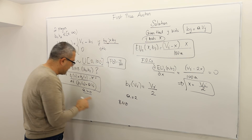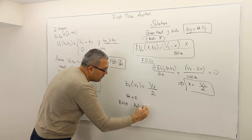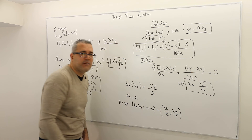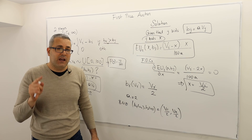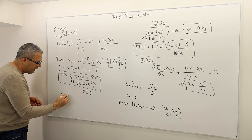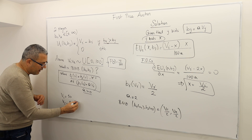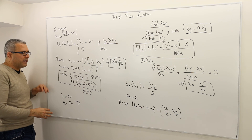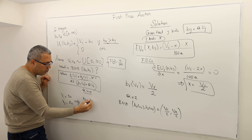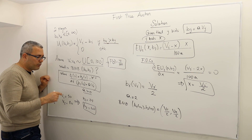The Bayesian Nash equilibrium in symmetric and linear strategies is such that each player bids half of their valuation. So for example, if player 1's true valuation is 50 and player 2's true valuation is 80, in the Bayesian Nash equilibrium player 1 is going to bid $25, player 2 is going to bid $40, and player 2 is going to win, paying $40.